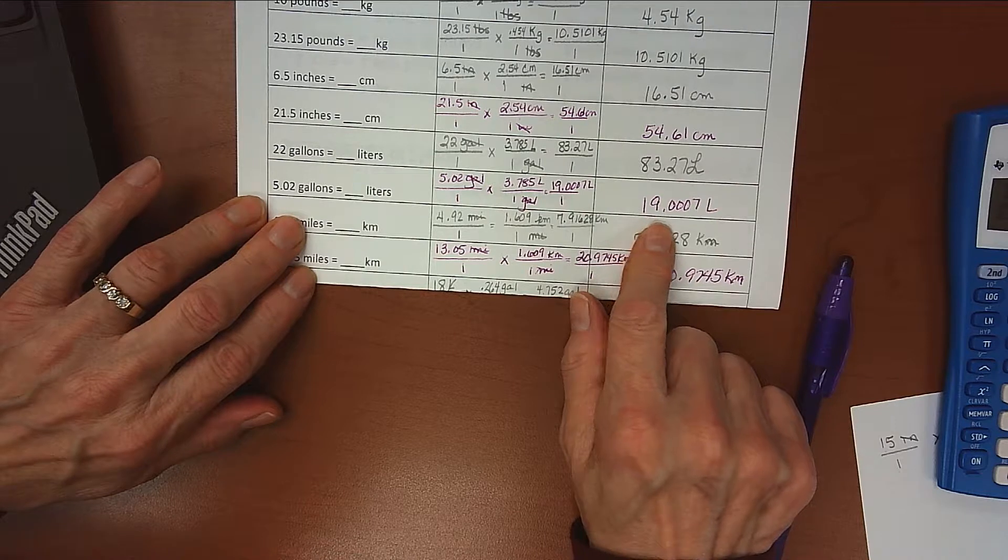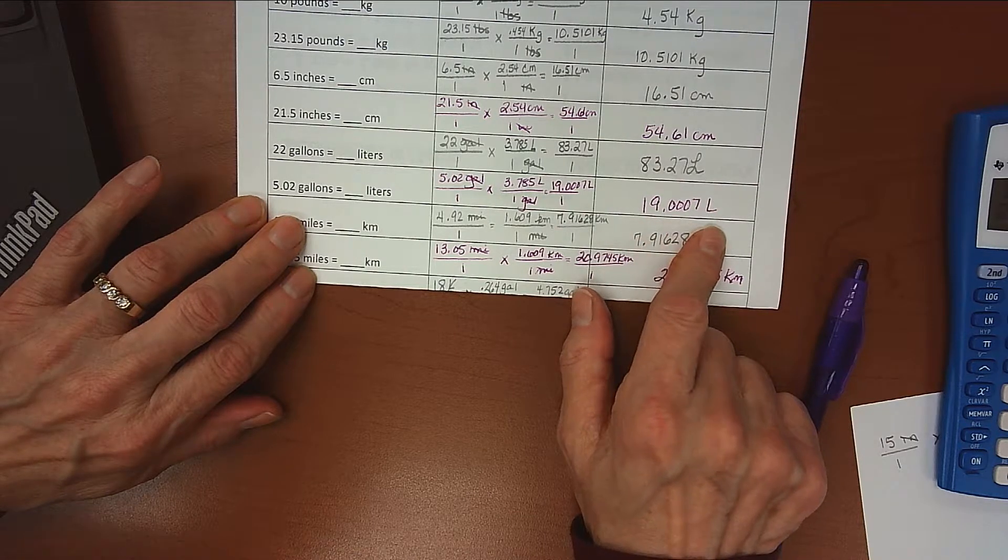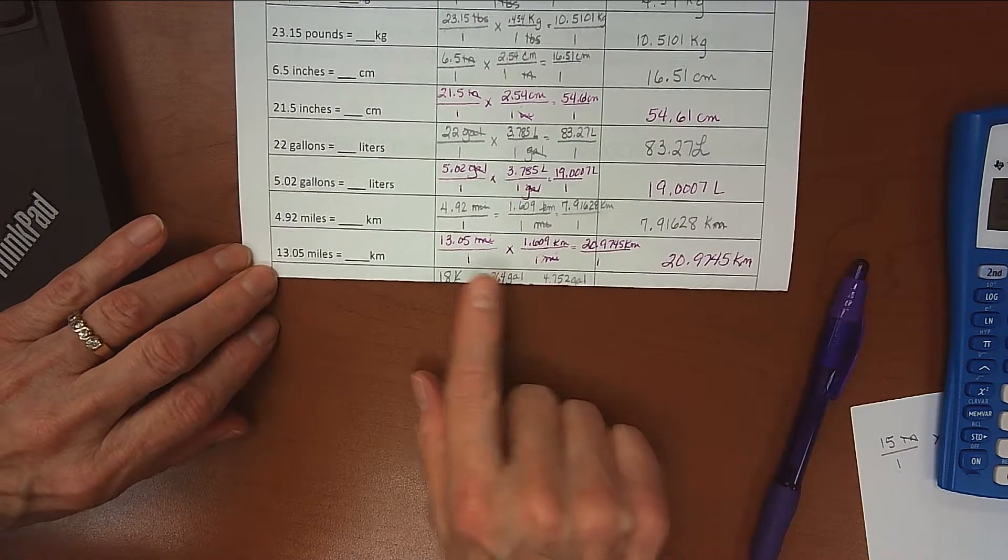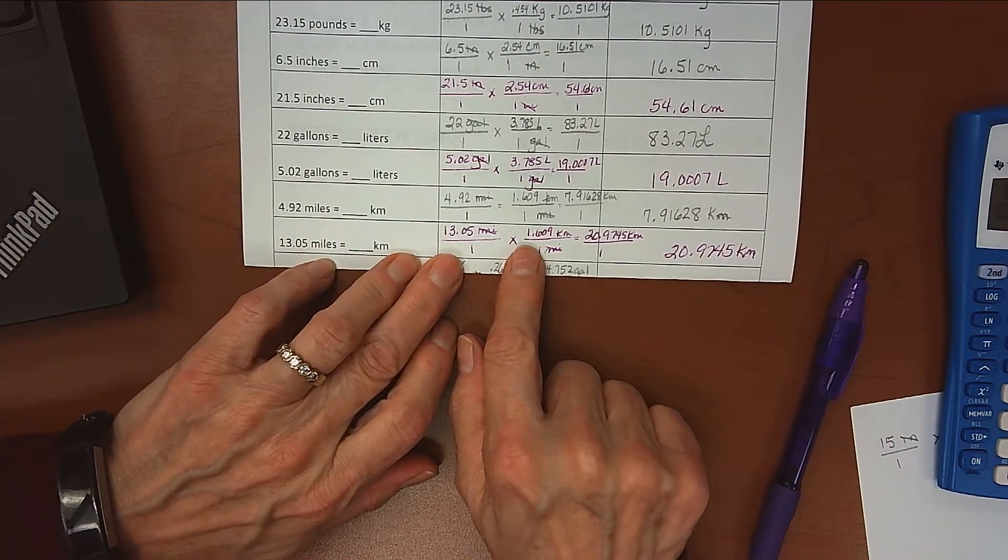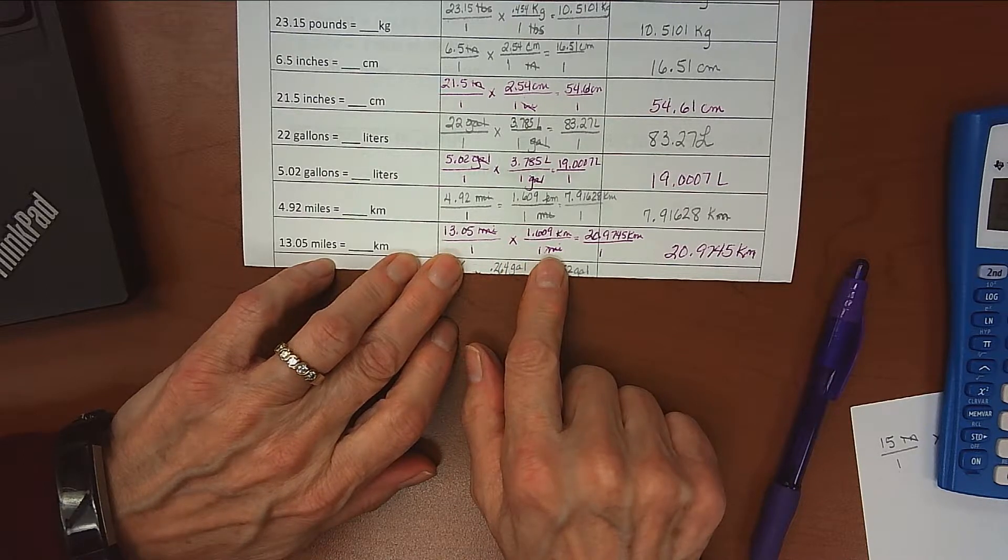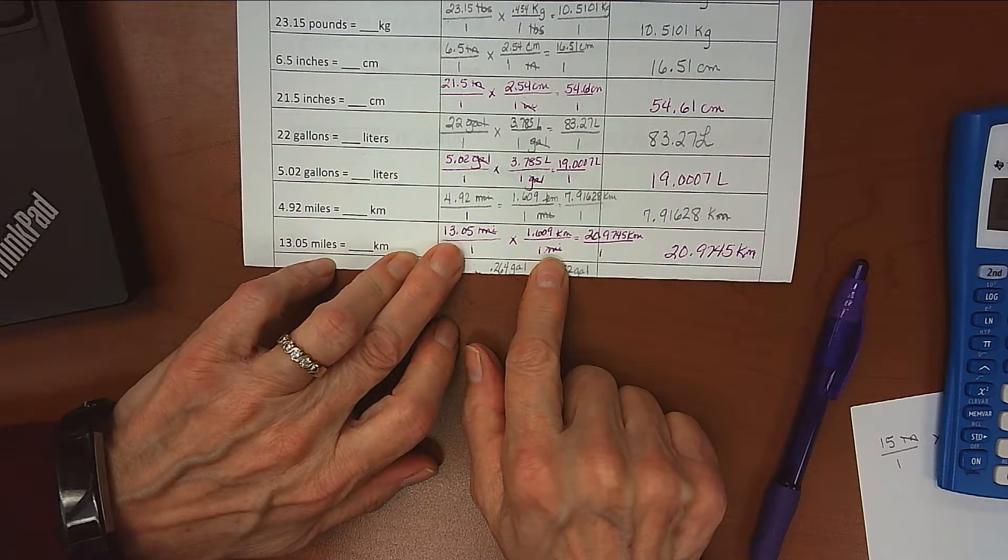Next one, my conversion factor was 1.609 kilometers over 1 mile. When I multiplied that out I got 2.974 kilometers.